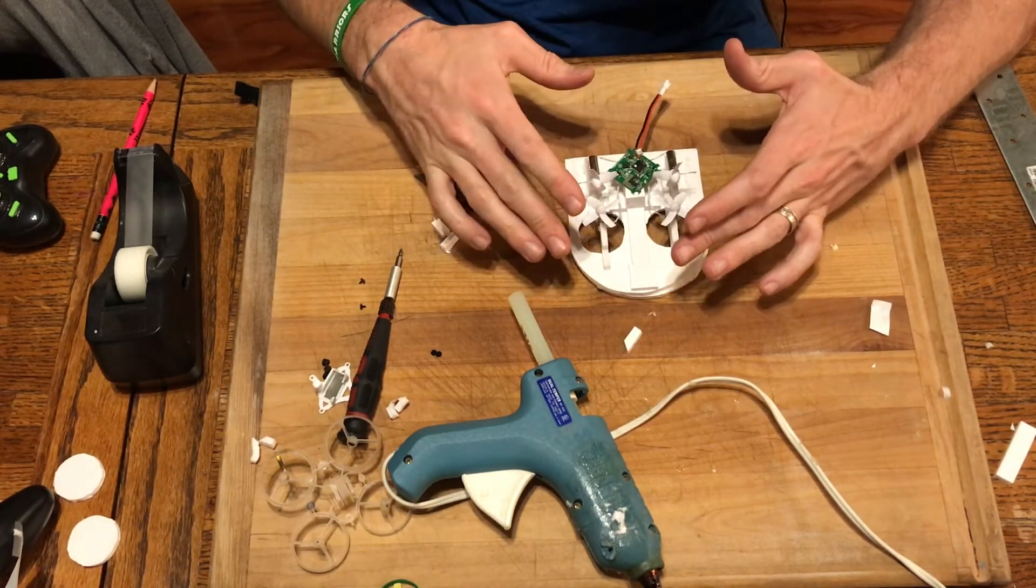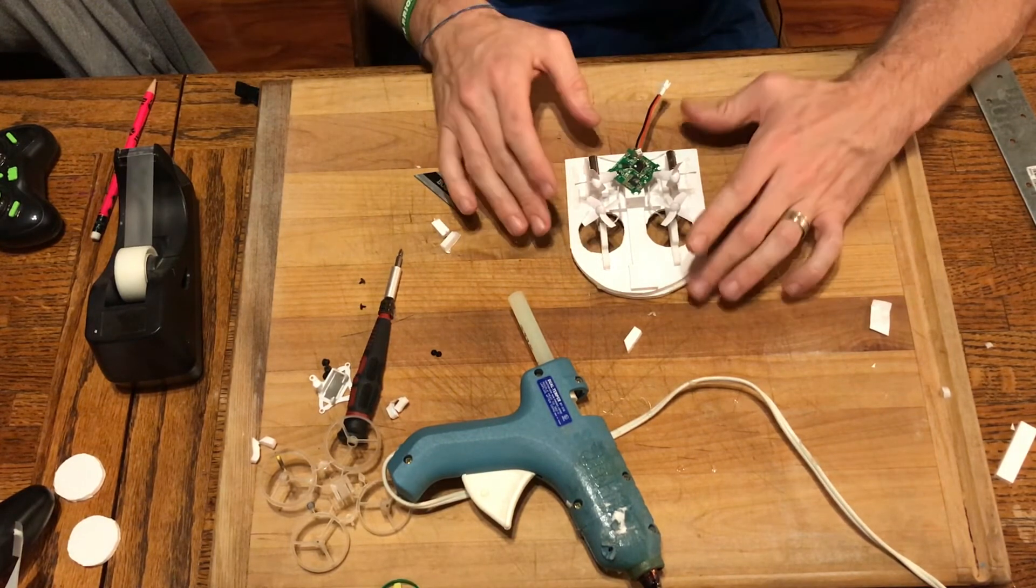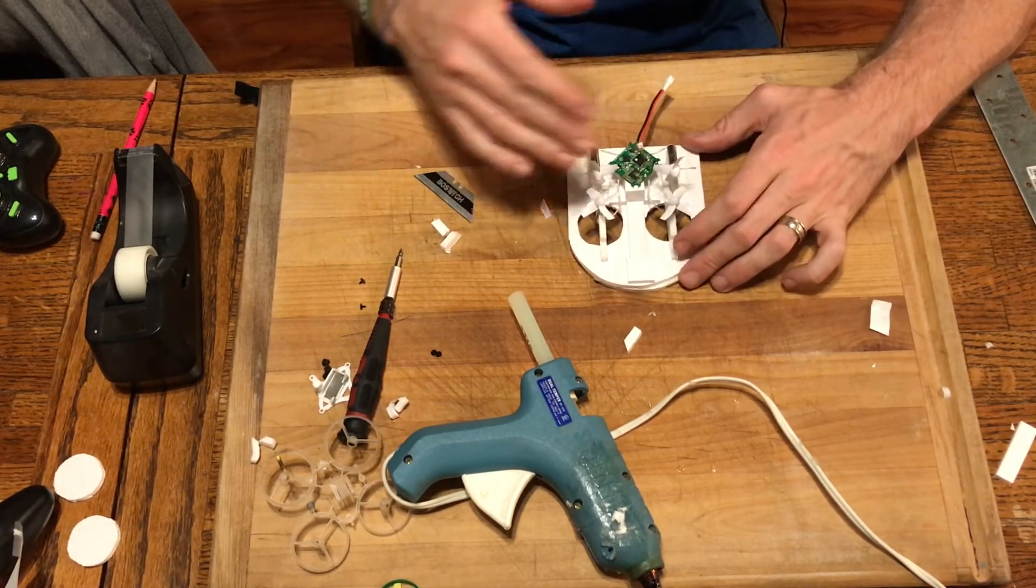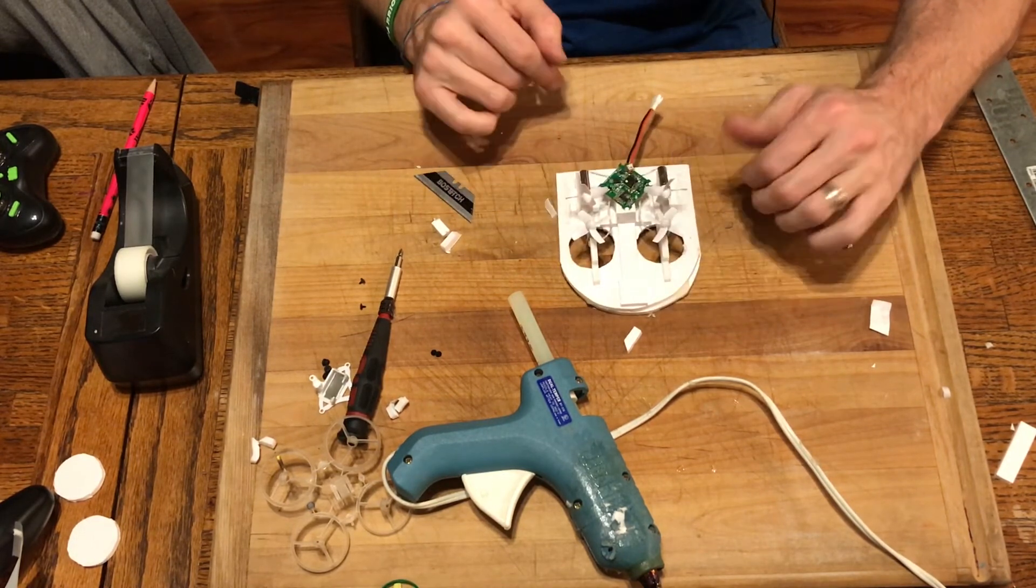So unless we're planning on putting a camera on it, which I am later, but right now I just kind of want to fly around. Now all we've got to do is put up a battery, bind it up to a transmitter and buzz around the house and see how this thing works.